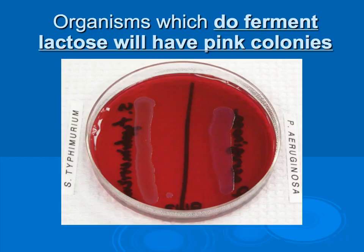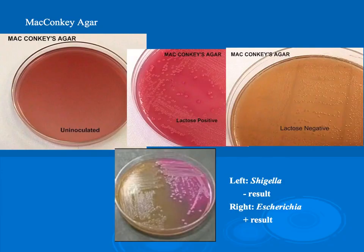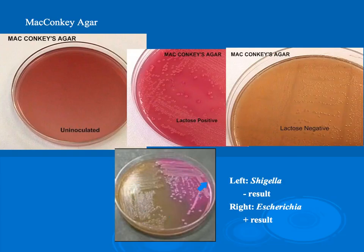Here we have MacConkey agar. MacConkey agar is both selective and differential, and it's used to differentiate between Gram negative and Gram positive bacteria. It is selective in that only Gram negative bacteria will grow. We have a non-inoculated dish and three dishes with growth, which indicates all three are Gram negative bacteria. In addition to testing for Gram negative, the test will also identify lactose fermentation or non-lactose fermenting. If we have pink colonies, we have lactose fermentation; if we have clear colonies, we have no lactose fermentation. Here we can see non-fermenting and fermenting of lactose.